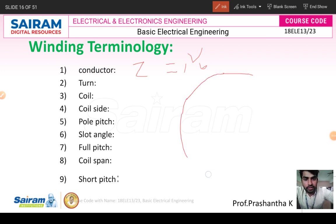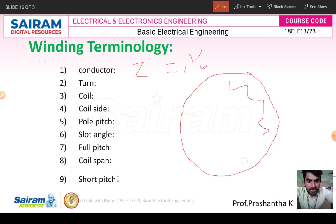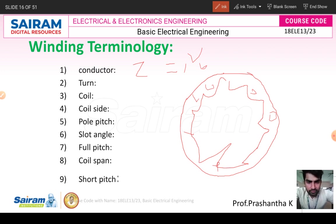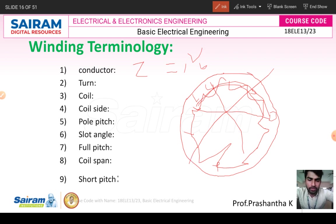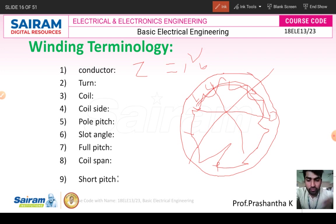Looking at the stator diagram of a synchronous generator, the stator consists of slots where conductors are kept. When a conductor cuts the magnetic field, an EMF is induced. The slot angle from one slot to another is 90 or 180 degrees depending on position, and between slots there are a number of slots per pole. Full pitch means the winding is fully connected with no shortening or reduction.